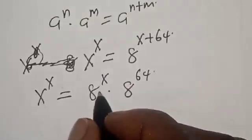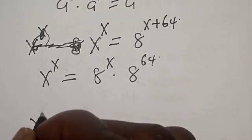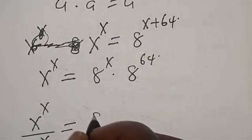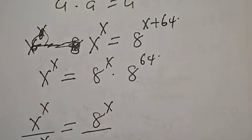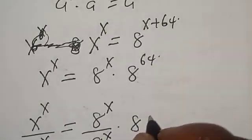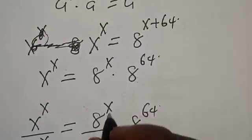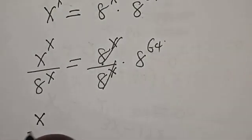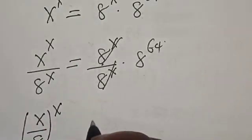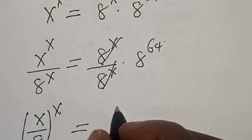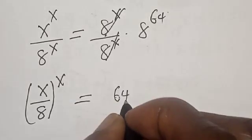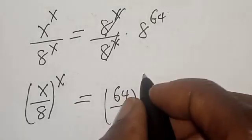Let's divide both sides by e raised to power s. We have s raised to power s divided by e raised to power s is equal to e raised to power s divided by e raised to power s, multiplied by 8 raised to power 64. This cancels out, leaving s divided by 8, all raised to the power s, is equal to 8 raised to the power 64, which is the same as 64 divided by 8, raised to the power 64.